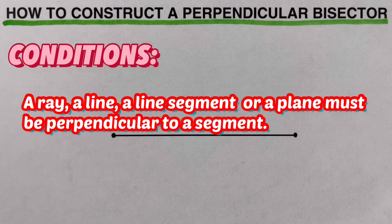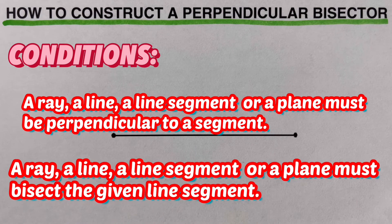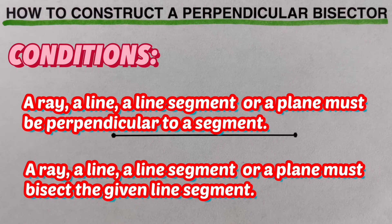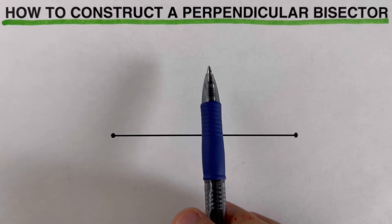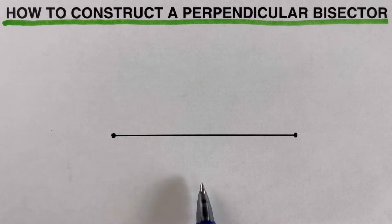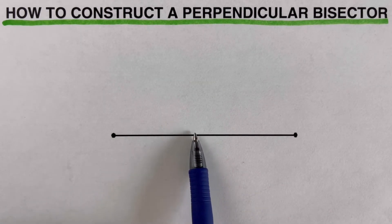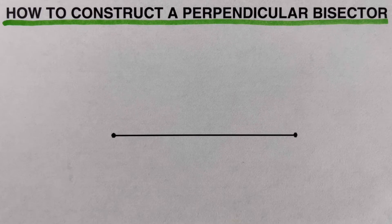The first condition is that a ray, line, line segment, or plane must be perpendicular to the given line segment, meaning it should form 90-degree angles at the point of intersection. The second condition is that it must bisect the given line segment, meaning it should cut or divide it into two equal pieces. So what we're trying to do is create a line that passes through the segment at a 90-degree angle and divides it into two equal pieces.